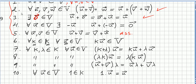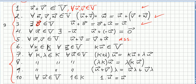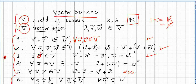We have these ten axioms. Axioms six through ten are scalar axioms because they are about the relation between scalars and vectors. The very first five axioms are about vector addition. If all these relations hold between the vectors in the vector space and the elements in the field of scalars, we say we have a vector space.